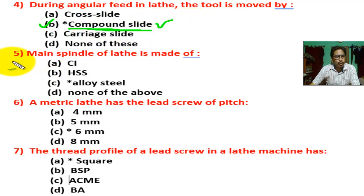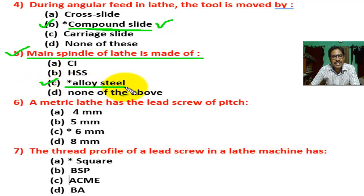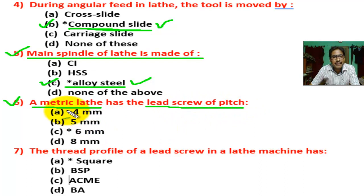Question number five: the main spindle of a lathe is made of — correct answer is C, alloy steel. Alloy steel is used to make the main spindle of a lathe. Question number six: a metric lathe has a lead screw of pitch — correct answer is C, 6 millimeters.